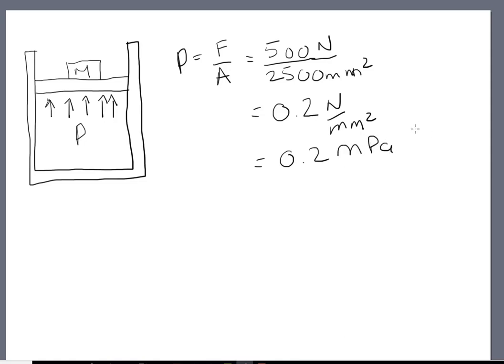Megapascals, or pascals, is a Newton per meter squared. So if we wanted to look at this in terms of actual Newtons per meter squared units, we have pressure equals force over area equals 500 Newtons over 2500 millimeters squared. Now in order to convert millimeters squared to meters squared, think about it.